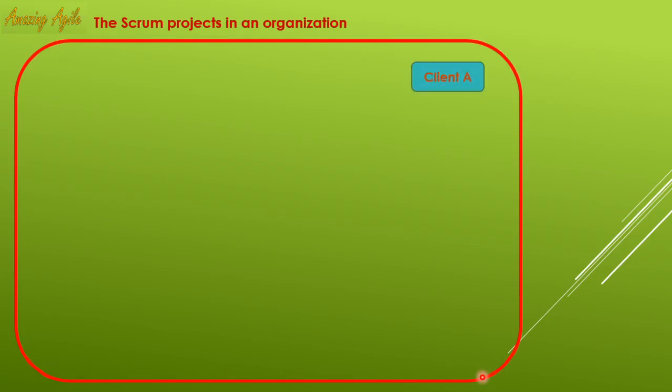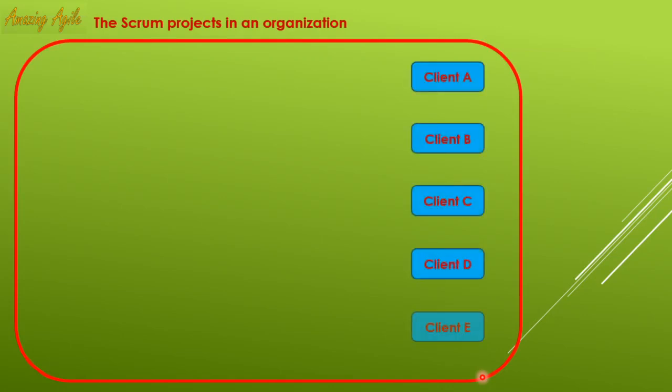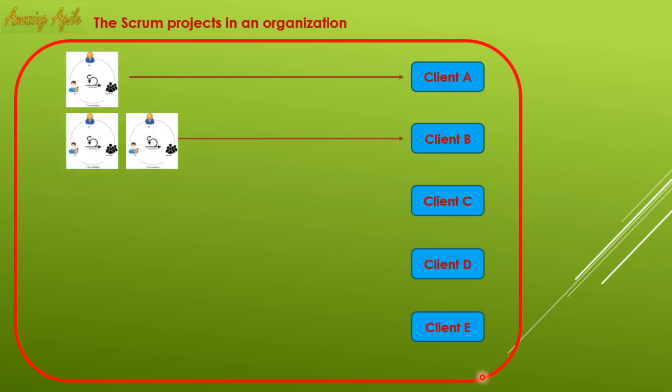Here is a software company with five clients: A, B, C, D, and E. For client A, they have only one scrum project, so it is very easy — nothing to worry about. For client B, there are two projects. It is also very easy; there may be twenty people, one or two scrum masters, one product owner, so it is easily manageable.